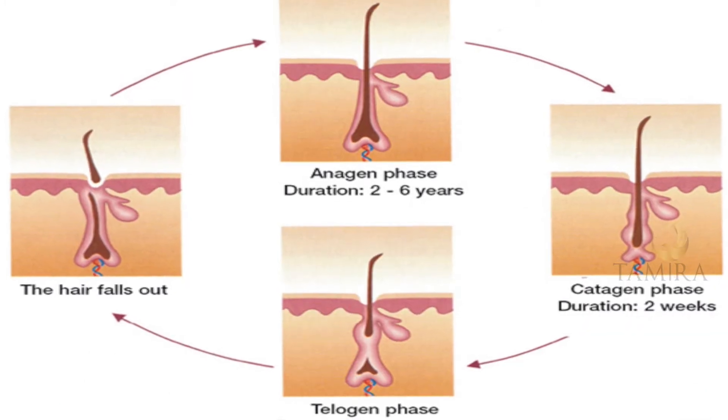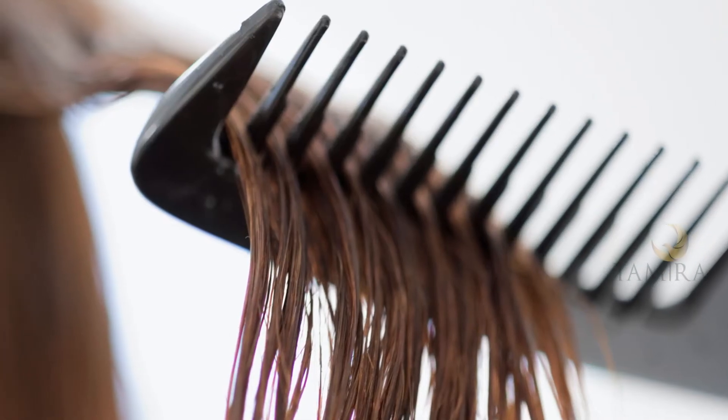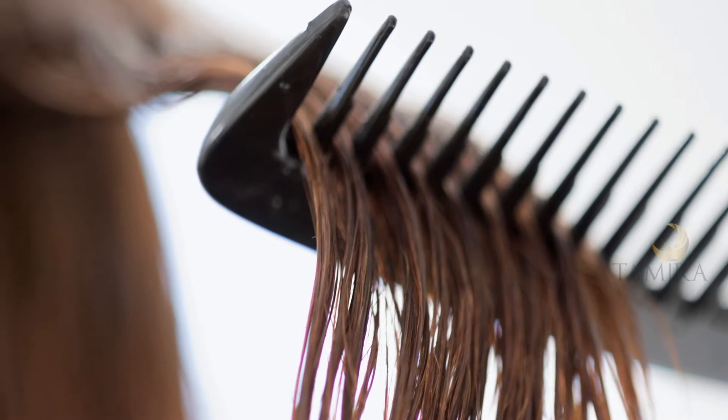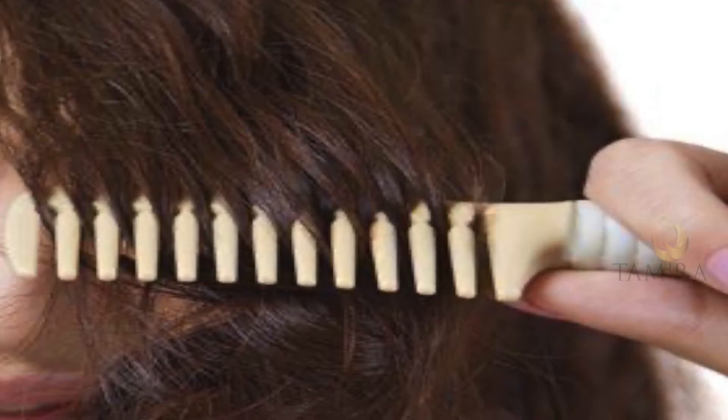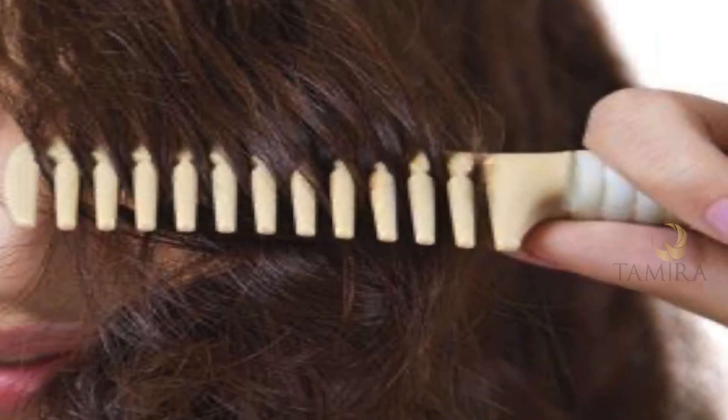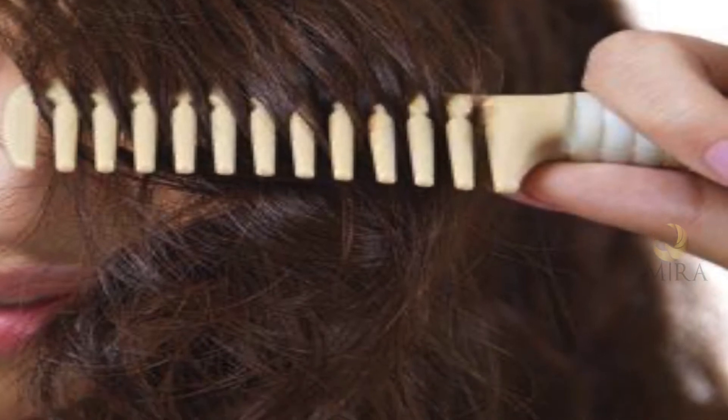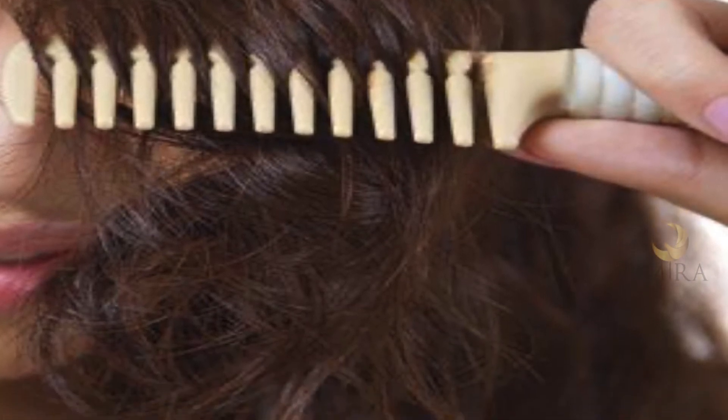In the telogen phase, the hair shaft is not attached to the root or the papilla. That is why when we shed hair while washing or combing, we do not feel any pain. But when we try to pull hair from our scalp, we do experience pain because it is attached to the root, which in turn is attached to the nerve endings.